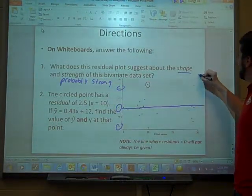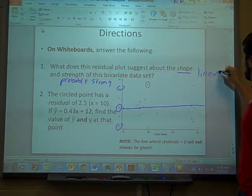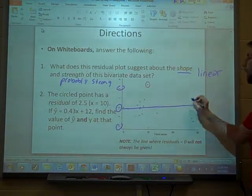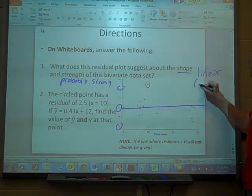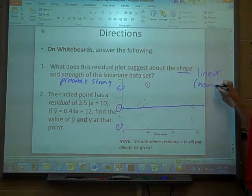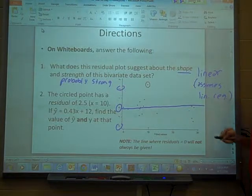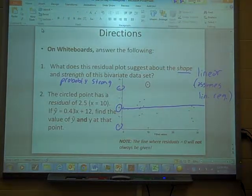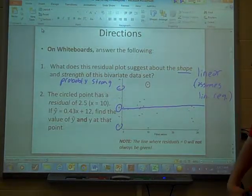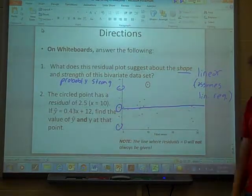The shape. Again, so it would be linear because there's no curve pattern here. Again, that assumes that's a linear regression. Because, again, that's all we've been doing so far is linear regression. So based on what you know so far, this would be a linear data set that's fairly strong.